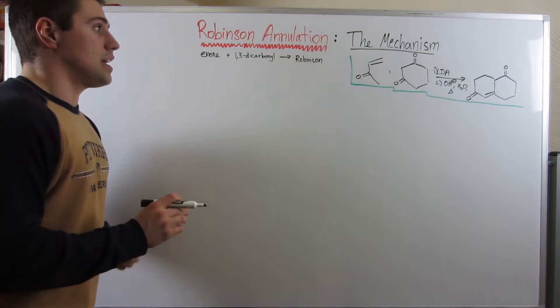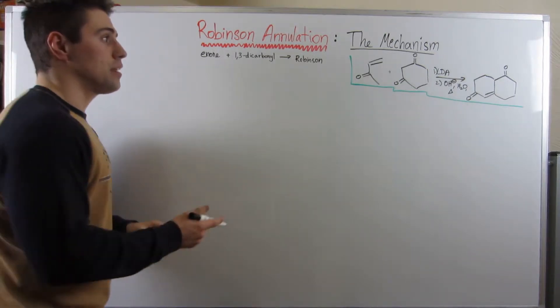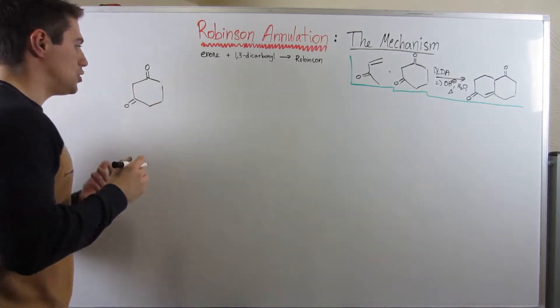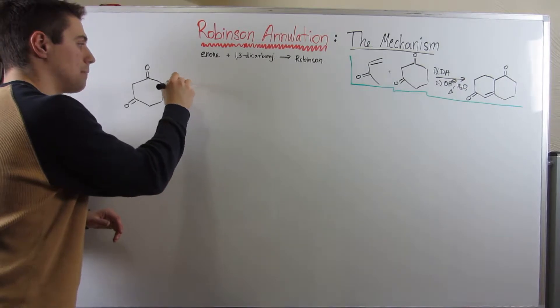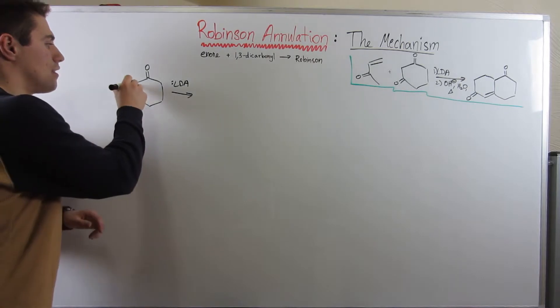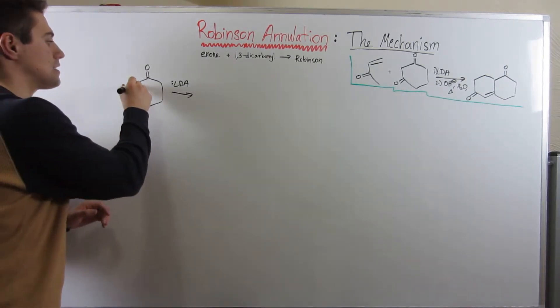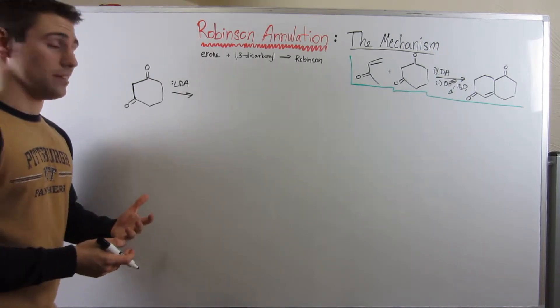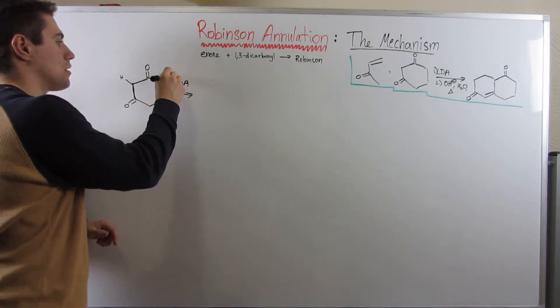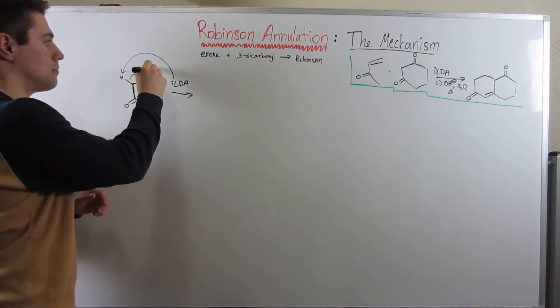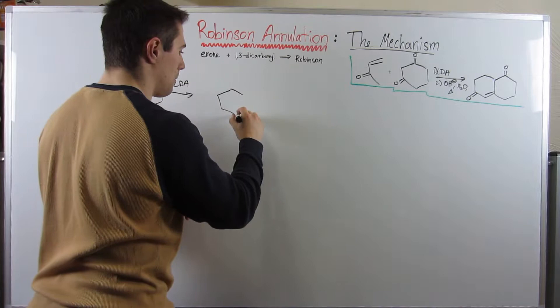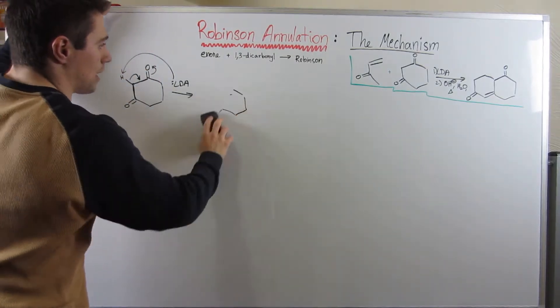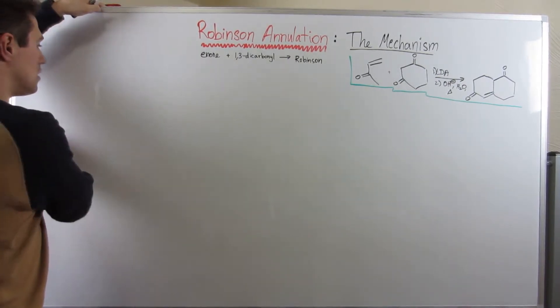I mentioned that it's first a Michael addition followed by an Aldol condensation. The first thing we need to do is form our enolate. We have a few alpha carbons to pick from when using LDA. However, can you see that this carbon doubles up as a double alpha carbon? He's an alpha carbon to this carbonyl and to that carbonyl. So there's double the resonance. He's easily going to be the alpha carbon that will be deprotonated. So I'll grab him, swing these electrons down, and make my enolate going up.